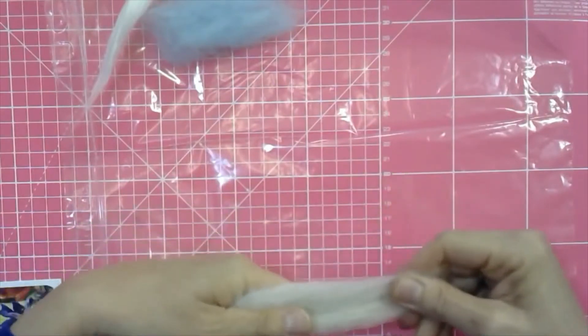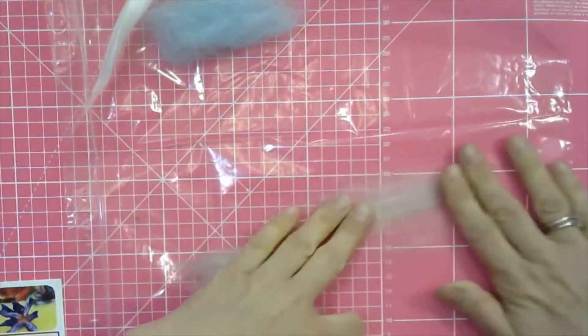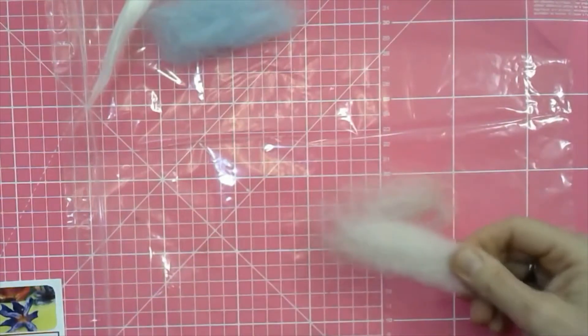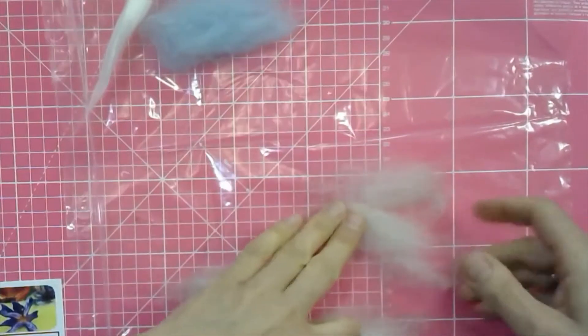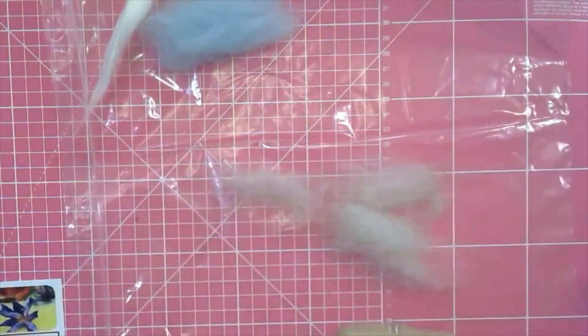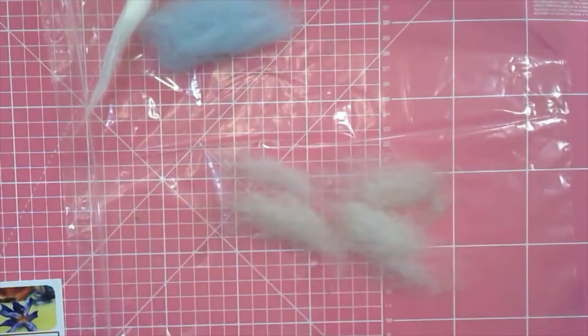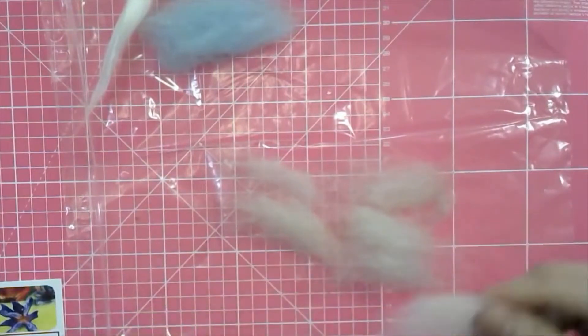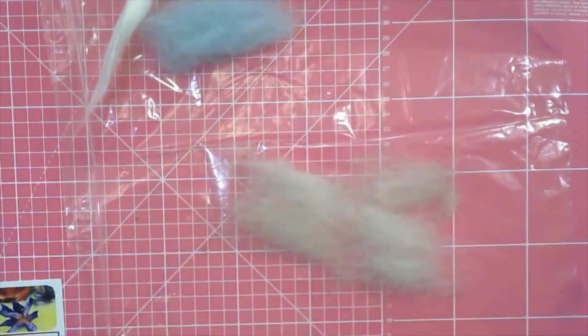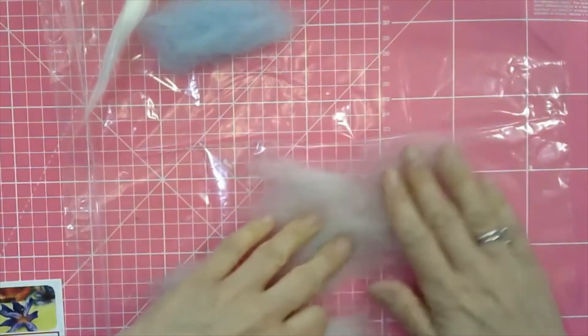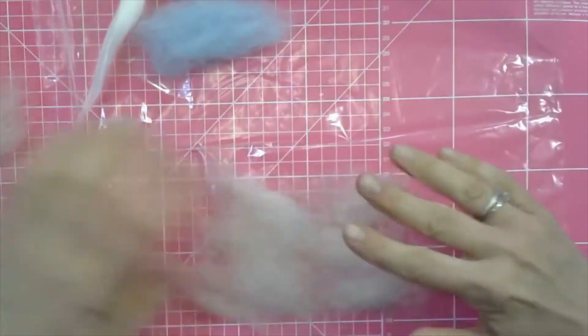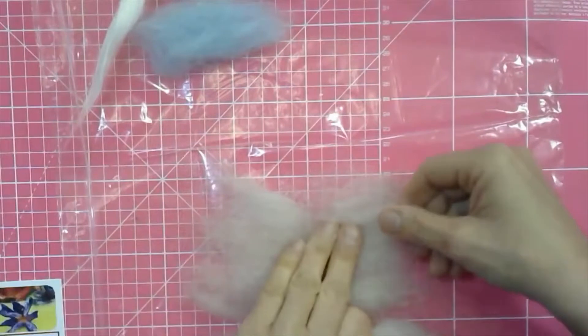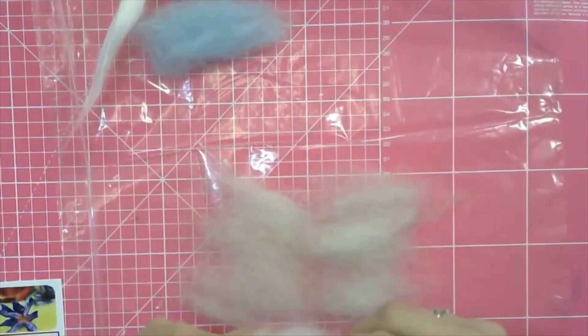You lay the fibers out on your bag as you want the wings to run already. Do it in small amounts. I'm doing it going some this way and some going that way, but they need to sort of touch because they need to felt together. Lay them out how you would like the wings, so that it's like a wing shape.